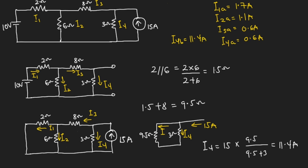The current flowing through the 9.5 ohms will be the remaining value when you subtract from the 15 amperes, so that is 15 minus 11.4, giving us 3.6 amperes. Since the 9.5 was formed by the 1.5 ohms and the 8 ohms in series, the current flowing through the 8 ohms is 3.6 amperes. The current through the 8 ohms is I3, so I3B equals 3.6 amperes.